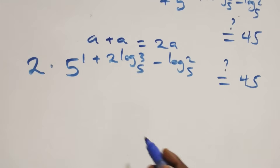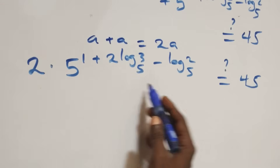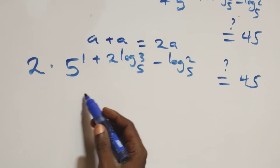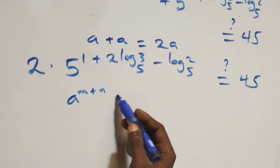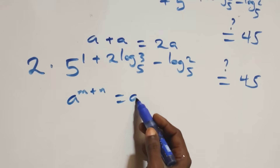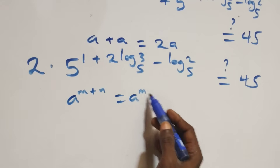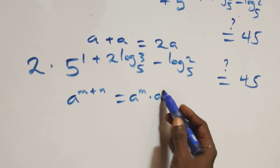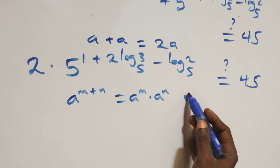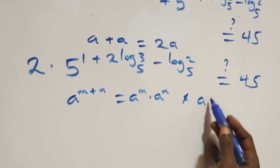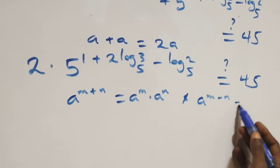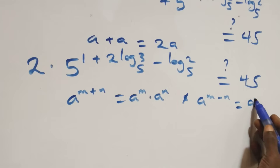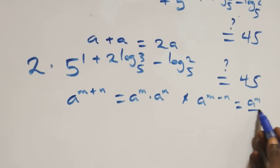Then we apply the laws of indices: when we have a raised to power (n plus m), this is the same as a raised to power n times a raised to power m. Also, a raised to power (n minus m) is the same as a raised to power n over a raised to power m.